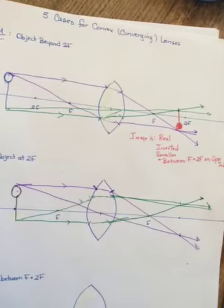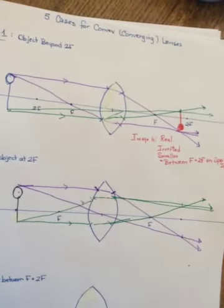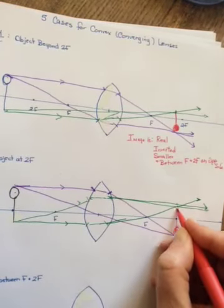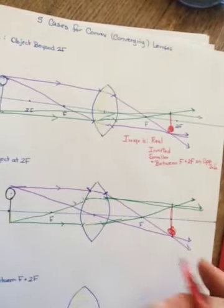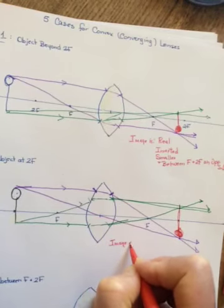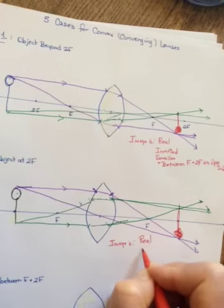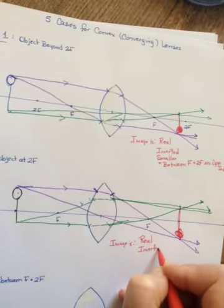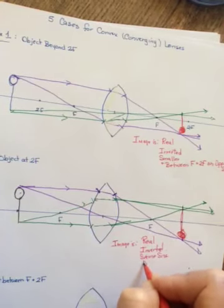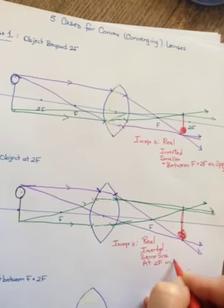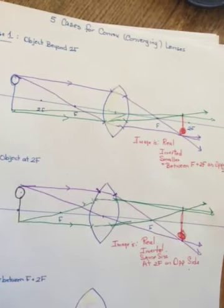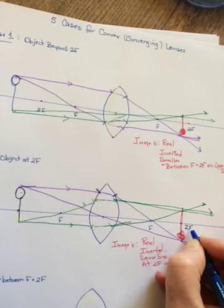Where the purple crosses, that's where the head is going to be; where the green crosses, that's where the feet are, and it should be the same size. So the image is real, inverted, same size, and at 2f on the opposite side. I hadn't marked in the 2f here because I knew the image was going to end up on it.